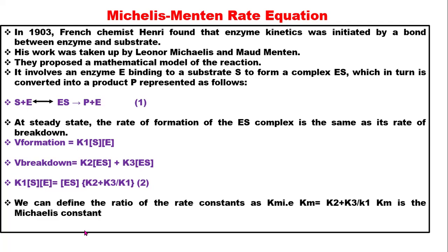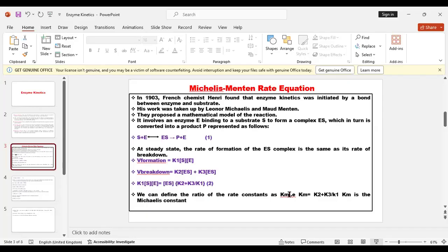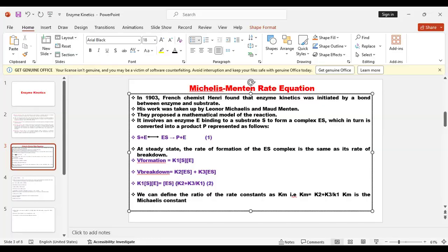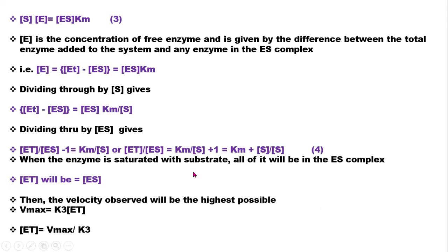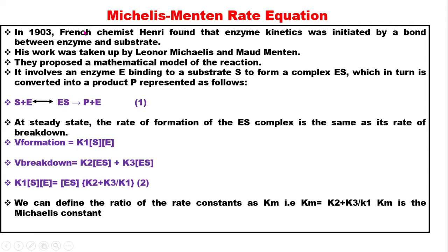We can define the ratio of the rate constants as Km. Km equals (k₂ + k₃) / k₁. This Km is the Michaelis-Menten constant, or Michaelis constant. So we have the enzyme-substrate complex multiplied by Km giving us substrate concentration multiplied by enzyme concentration, as equation 3.